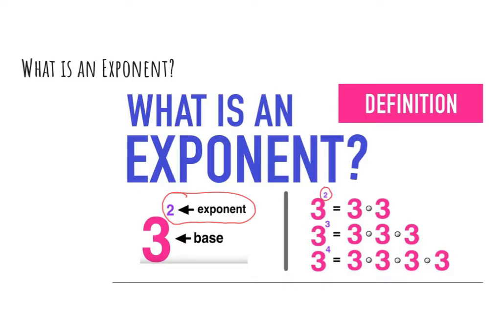For example, 3 squared or 3 to the power of 2 literally means 3 times 3. 3 cubed or 3 to the third power is taking the base 3 and multiplying it by itself 3 times. 3 to the fourth power is taking the base and multiplying that by itself 4 times.